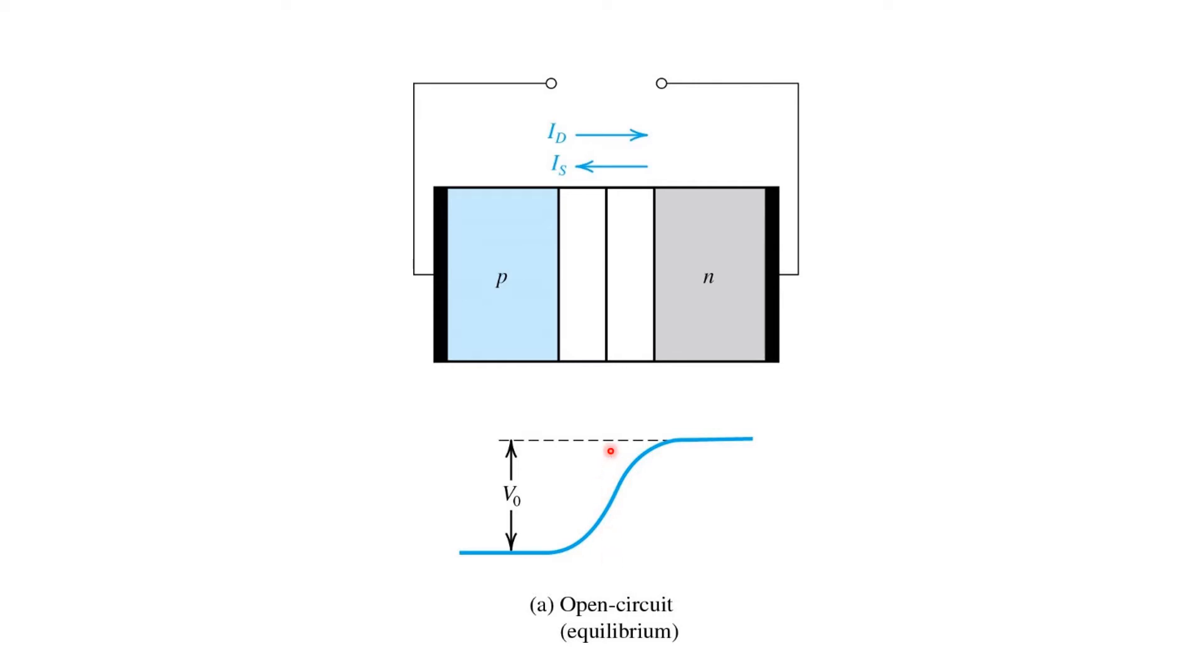That built-in voltage opposes diffusion currents and reduces the diffusion current from P to N and N to P to a level exactly equal to the drift current, IS, that flows because of thermally generated charge carriers being swept across the depletion region by the electric field. So in this steady state, we've got zero net current flowing.